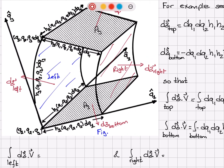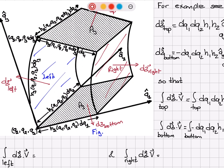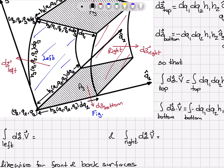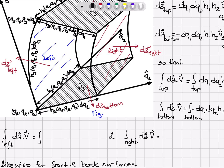For the left side, one side is h_2 dq_2 and the other is h_3 dq_3, with one corner at q_1, q_2, q_3, so no further evaluation point is needed. The area vector orientation is in the minus q_1 hat direction, giving a minus sign. So the integral for the left surface is minus dq_2 dq_3 h_2 h_3 v_1.